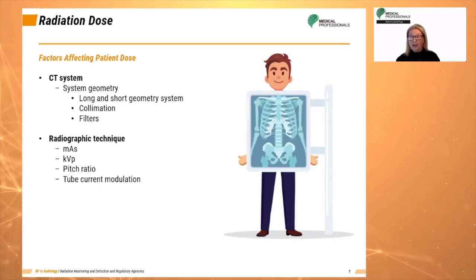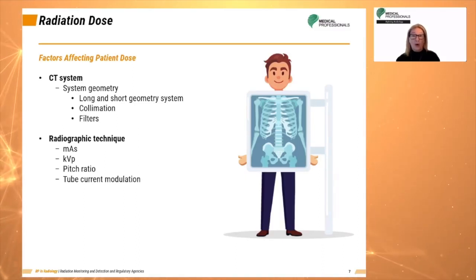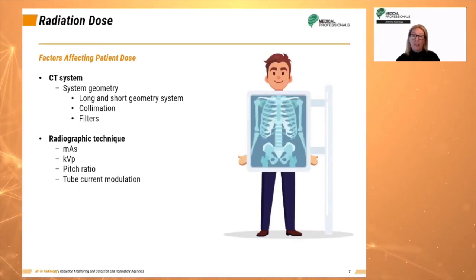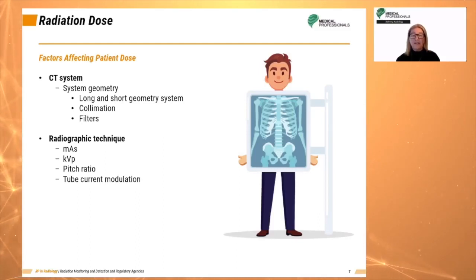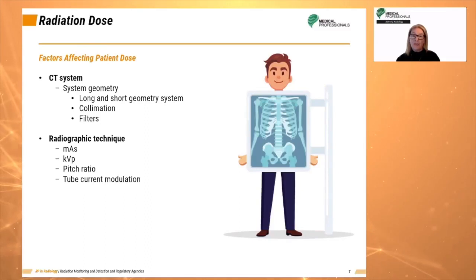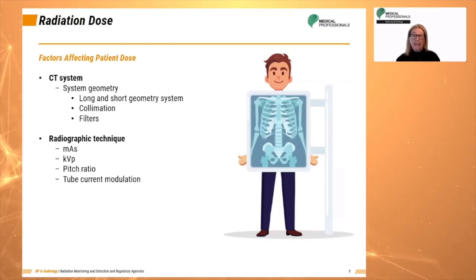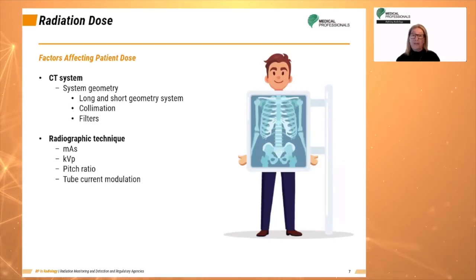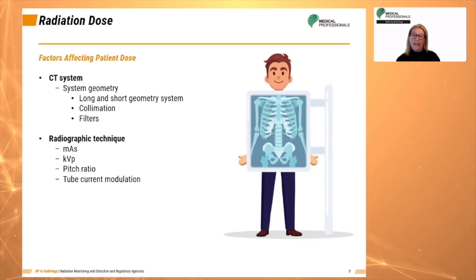Tube current modulation regulates the pulse of current through different body tissues. It reduces overall radiation dose to the patient and allows sufficient photons to pass through the widest parts of the patient without unnecessary dose to the narrower parts. The purpose is to maintain a near-constant signal-to-noise ratio across different areas of the body with varying thicknesses, avoiding excessive radiation doses while maintaining image quality.